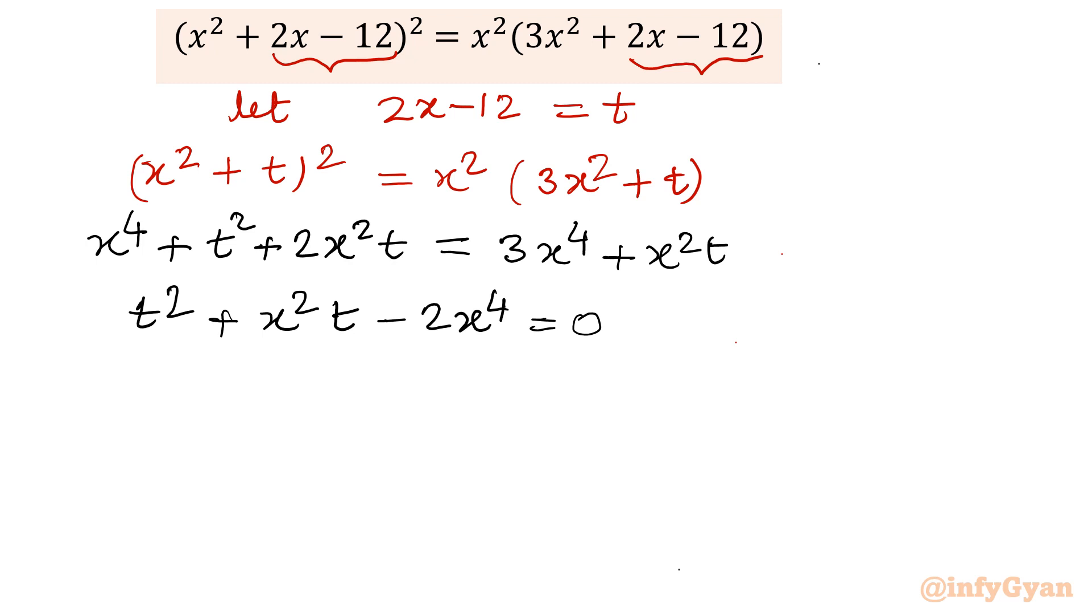I am writing in this manner: t square plus 2x square t minus x square t minus 2x power 4 equal to 0. Now if you notice this equation, this is quadratic in t. So if you compare this equation with the standard one, ax square plus bx plus c, then I can write a is equal to 1, b is equal to x square, and c is equal to negative 2x power 4.